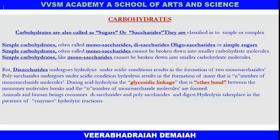Simple carbohydrates, often called monosaccharides, cannot be broken down into smaller carbohydrate molecules. But disaccharides undergo hydrolysis under acidic conditions, resulting in the formation of two monosaccharides, which are simple sugars. Polysaccharides also undergo hydrolysis under acidic conditions, resulting in the formation of simple sugars — simple units.